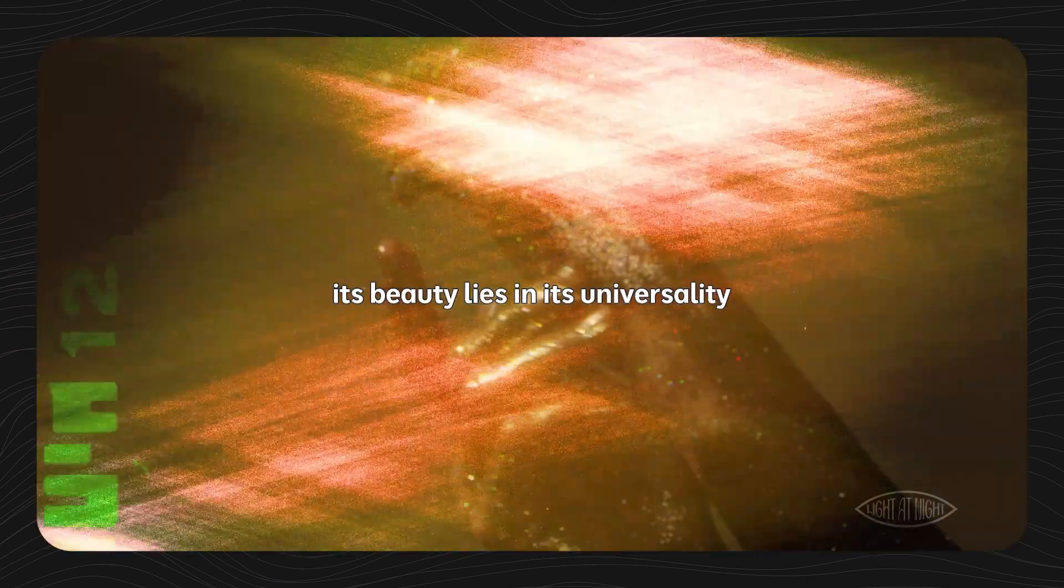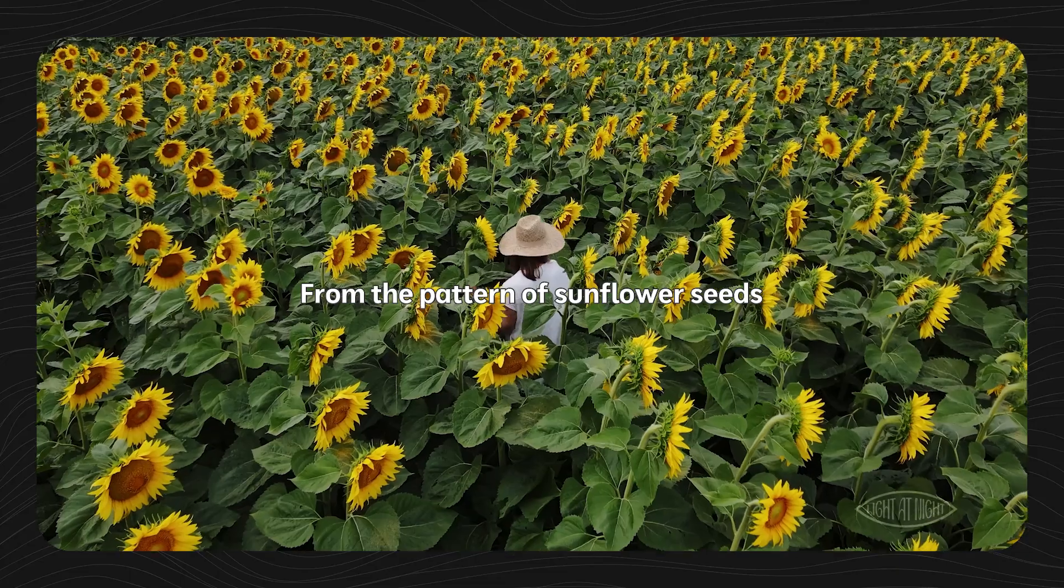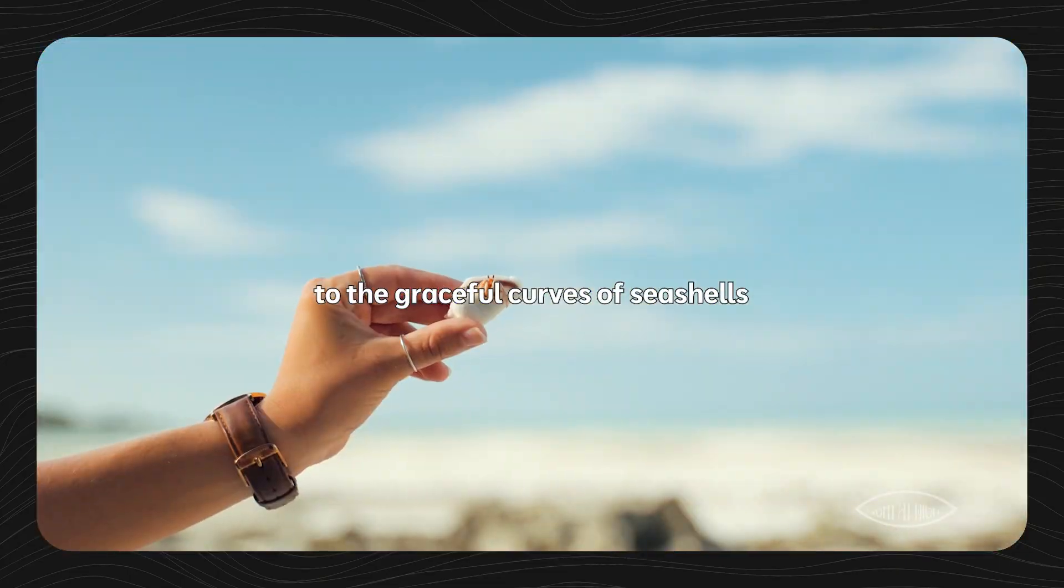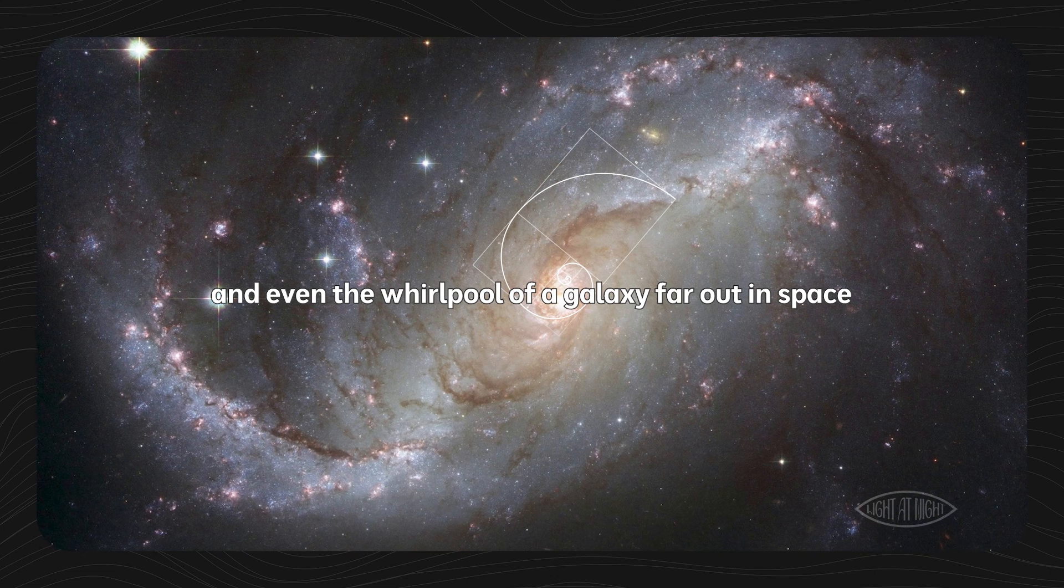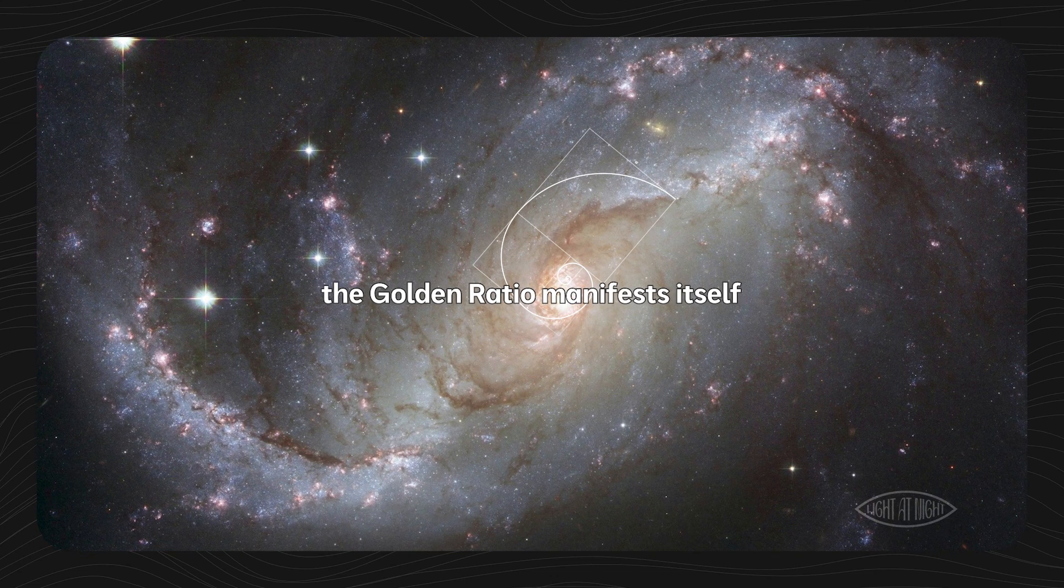But this is not just a dry mathematical concept. Its beauty lies in its universality. Take a look at nature around you. From the pattern of sunflower seeds spiraling towards the center, to the graceful curves of seashells, and even the whirlpool of a galaxy far out in space, the golden ratio manifests itself.